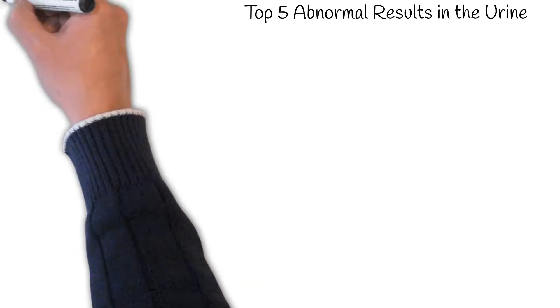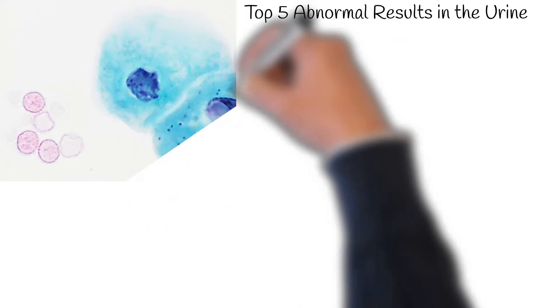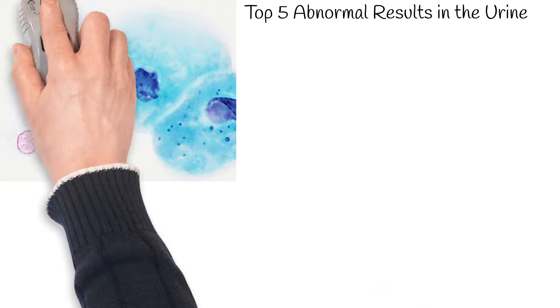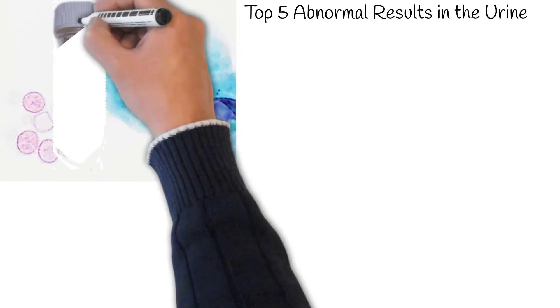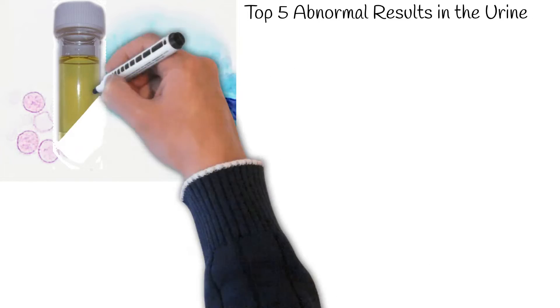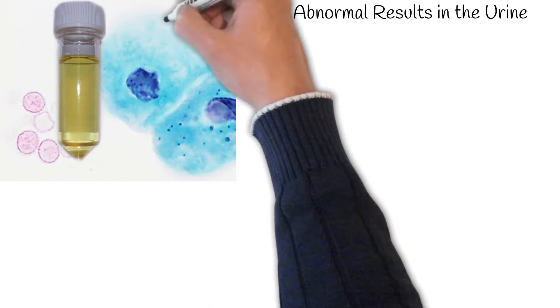Approximately 20% of the population have at least one abnormal result on a urinalysis. We will discuss the 5 most prevalent findings.